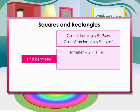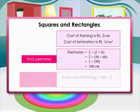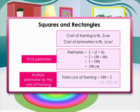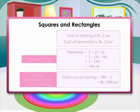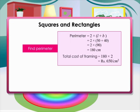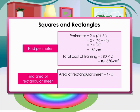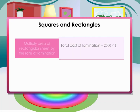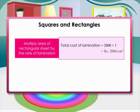To find the cost of framing, first we need to find the perimeter, then multiply the perimeter by the rate for framing. To find the cost of lamination, we need to find the area of the rectangular sheet and multiply it by the rate of lamination. To find the total cost, add the cost of framing and the cost of lamination.